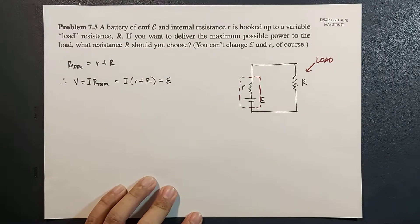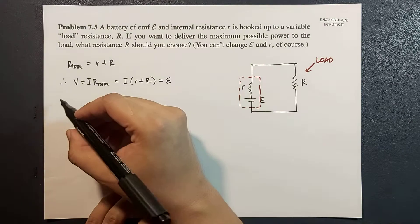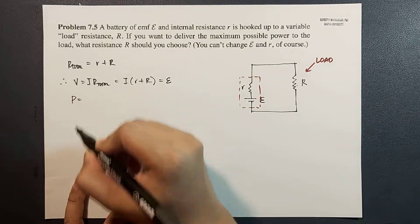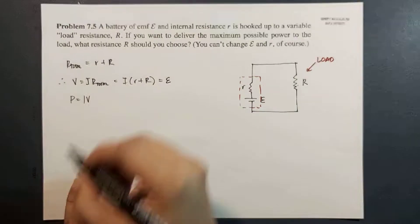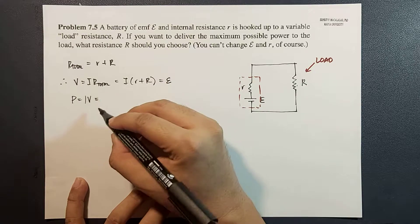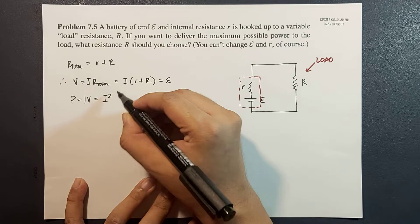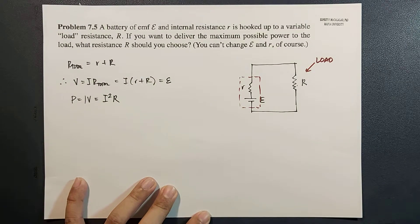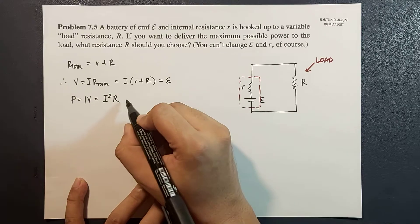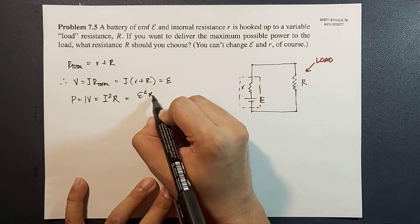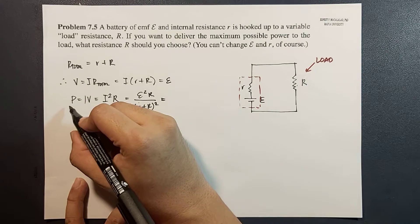In this case V is the battery EMF epsilon, and small r and epsilon are constants. By Joule heating, the power dissipated on the load resistor is P equals I squared times R. In terms of epsilon, I squared equals epsilon squared over (R plus r) squared, so P equals epsilon squared times R over (R plus r) squared.